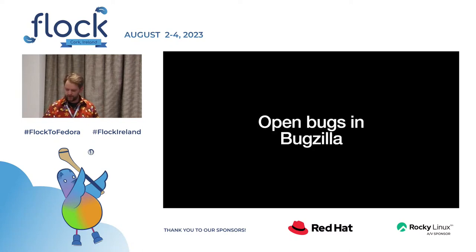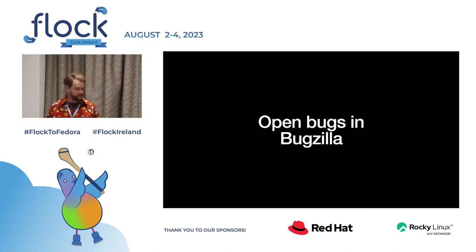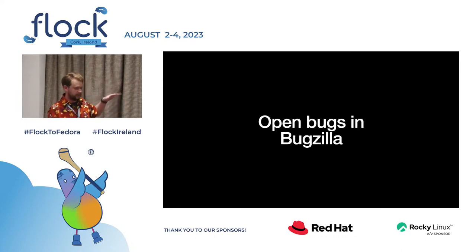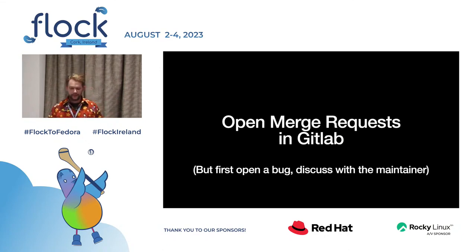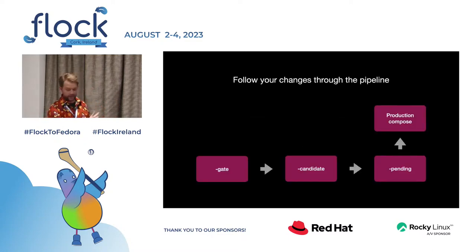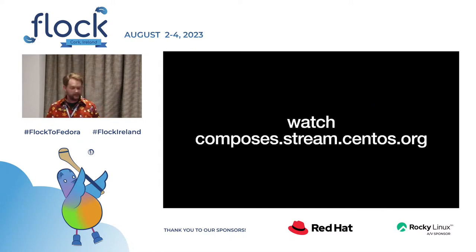Contributing to CentOS Stream may not be as easy as contributing to Fedora because of these constraints — which is why Fedora is very valuable. If you can, please do your contributions in Fedora and let them flow into Stream, rather than making changes directly in CentOS Stream. Or join a SIG or start a SIG and make your changes there. To make contributions: open bugs in Bugzilla, make it easy for the maintainer to read and reply, and send merge requests — but first talk to the maintainers in a bug and confirm they have capacity to merge it.